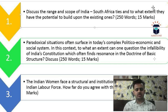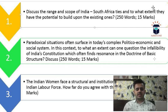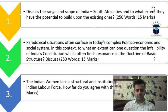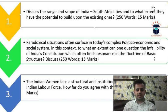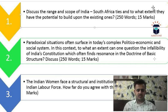The second question is: Paradoxical situations often surface in today's complex political, economic, and social system. In this context, to what extent can one question the infallibility of India's constitution, which often finds resonance in the doctrine of basic structure? You have to discuss whether the Indian constitution is infallible or fallible, considering that the Supreme Court has held the doctrine of basic structure as the core of the constitution which cannot be altered.